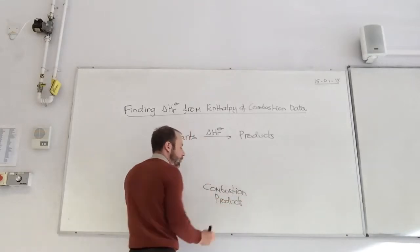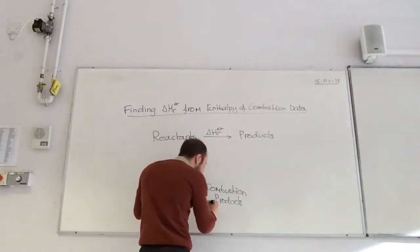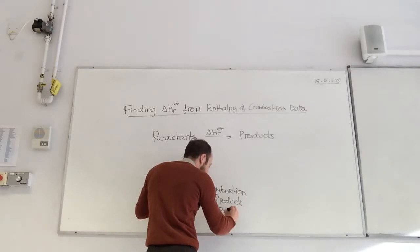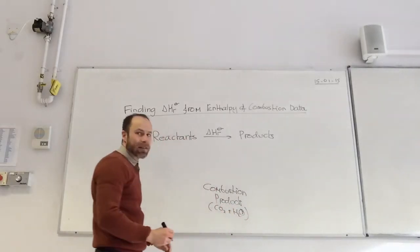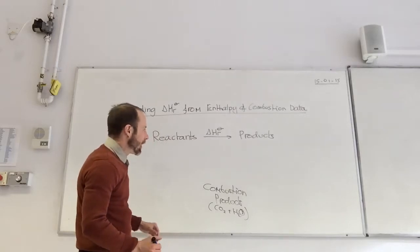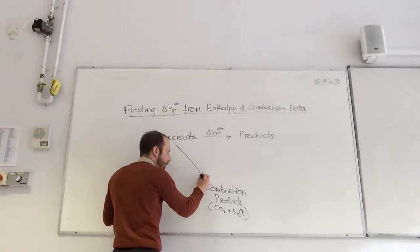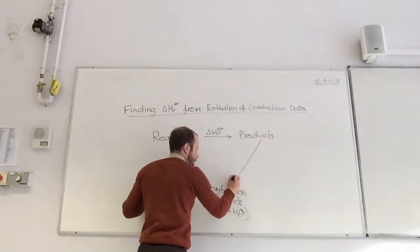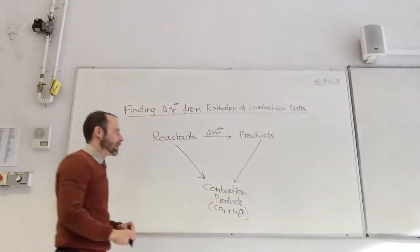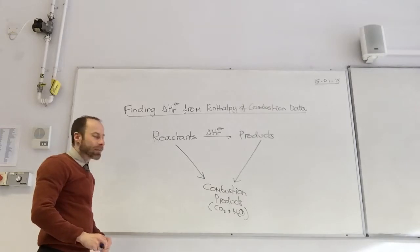So, down leading by your combustion product. Usually, it's CO2 and H2O. Usually, because it can vary. And my arrows now go down. Like so. So, it's a slightly different cycle.